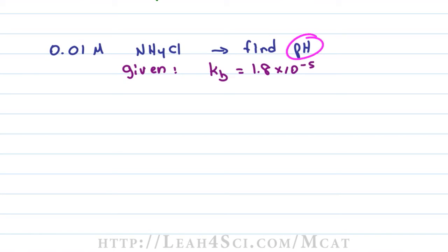Let's try a slightly trickier example. This time, let's say we're given a 0.01 molar solution of ammonium chloride and we're asked to find the pH. Once again, we're given that Kb of ammonia is 1.8 times 10 to the minus 5. We're asked for a pH. We're given an acid but the only value is a Kb which is a base. How do we calculate this from a base?